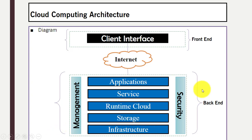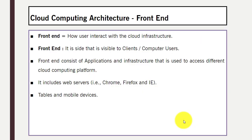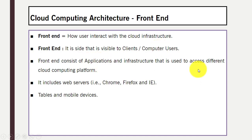Then we have management — how the cloud will manage all this. Then we need security for the protection of the system and data. Now, front end means how the user will interact with the infrastructure that is visible to the clients, or computer users, that are willing to access the cloud. Front end is visible to the end users and consists of different applications and infrastructure used to access different cloud computing platforms.